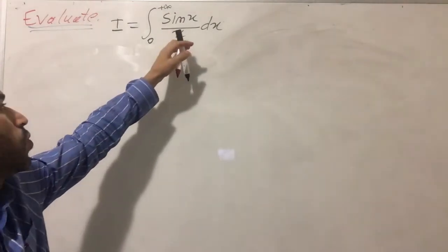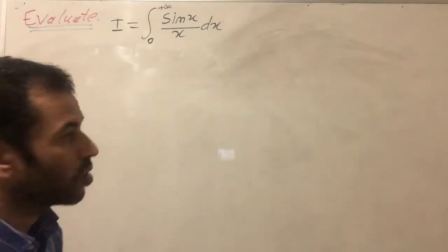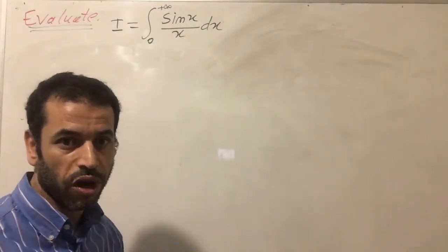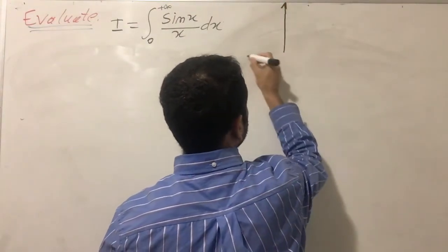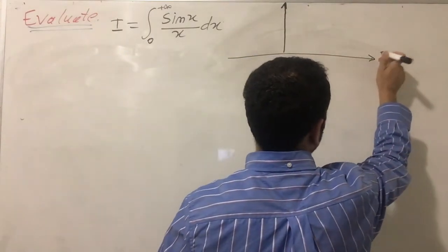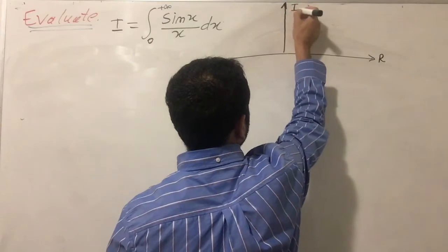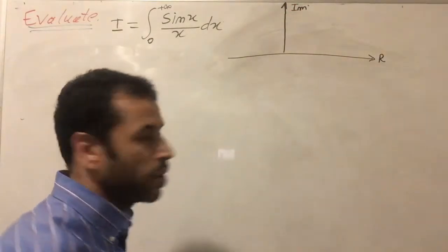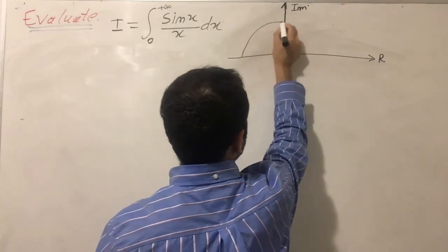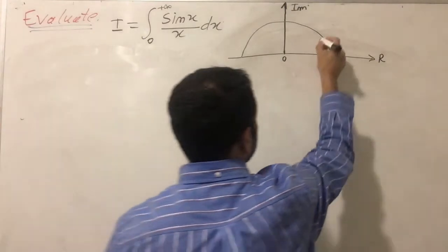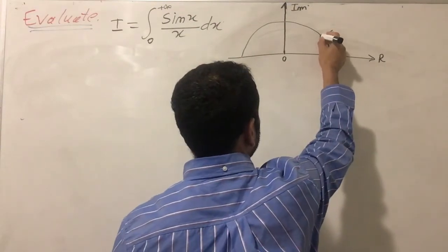If you take a look at the denominator, we have one singularity here. So I'm going to use complex analysis in order to evaluate this integral, by choosing an upper half semicircle with a radius r. Let's construct this semicircle. The x-axis represents the real numbers, and the vertical axis represents the imaginary numbers in the complex coordinate plane. So this is the origin O, and this is the upper half semicircle.